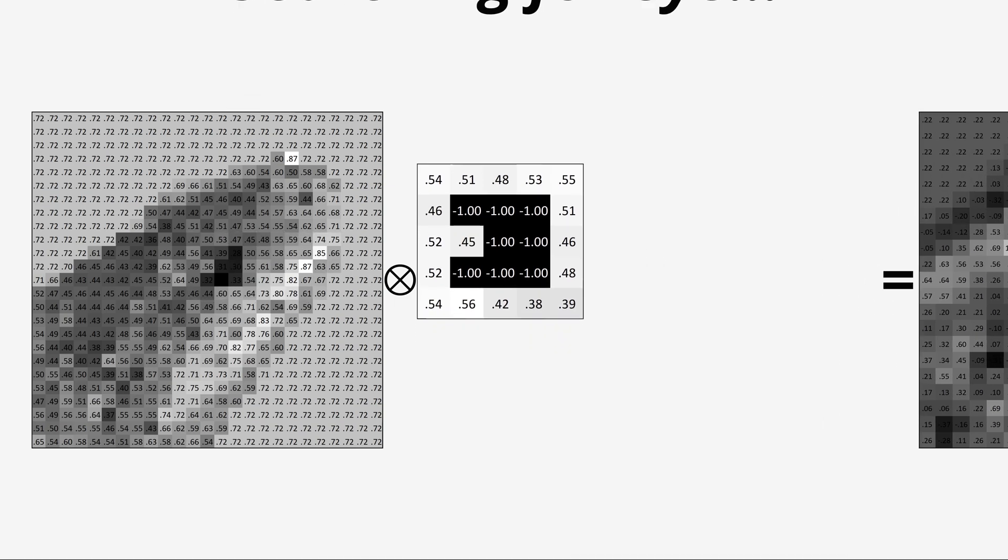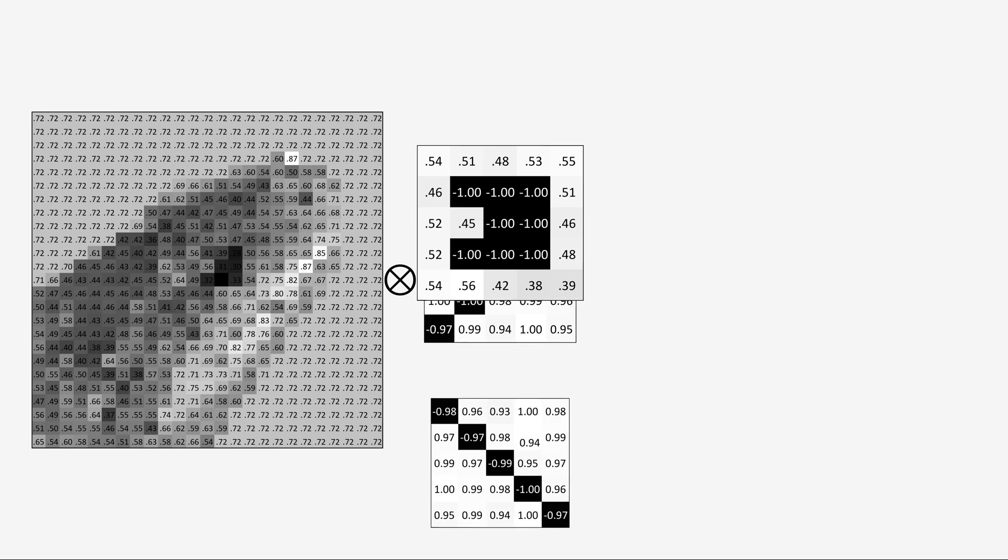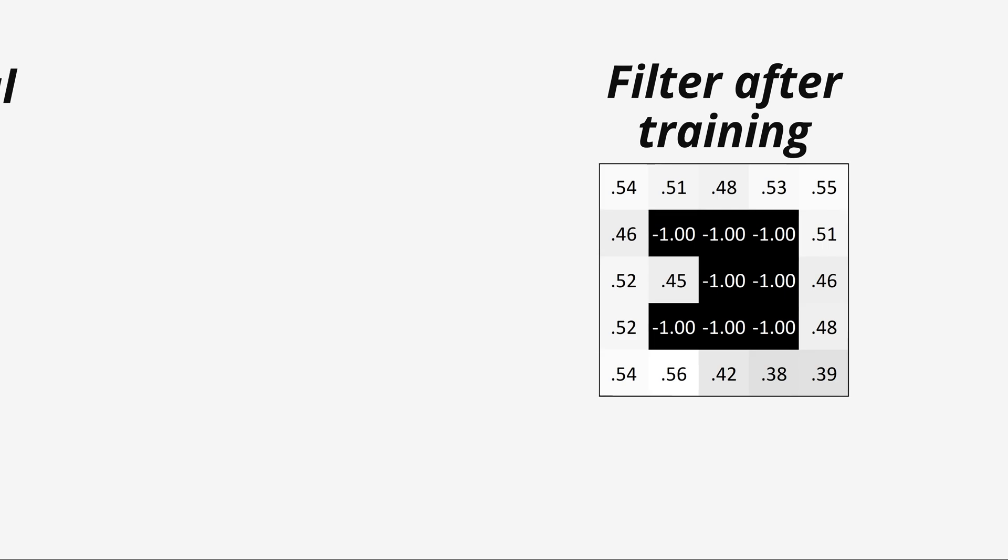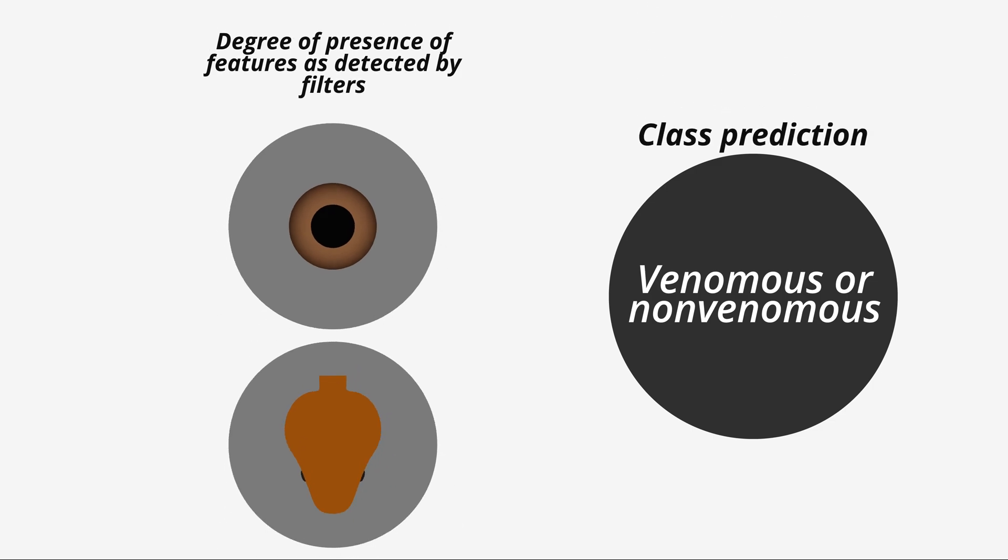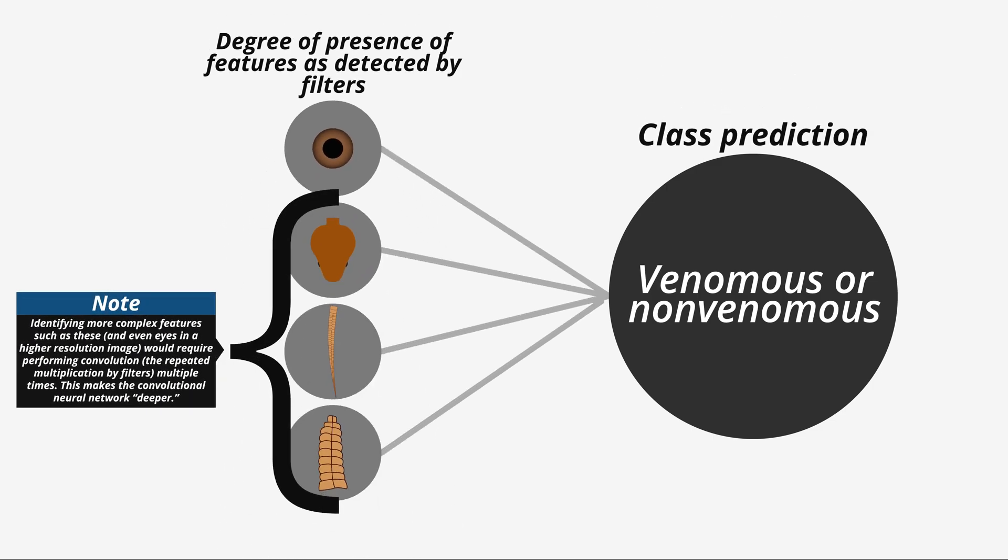There are many of these filters to look for many features. The specific features that the convolutional neural network looks for are determined by adjusting the filters during training. Finally, the relationship between features and the different possible classes is established later in the network, a lot like in the example from earlier.